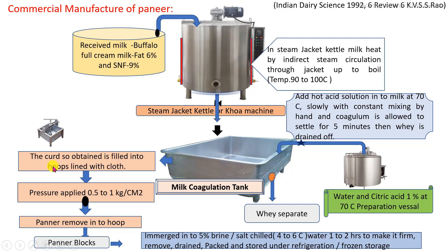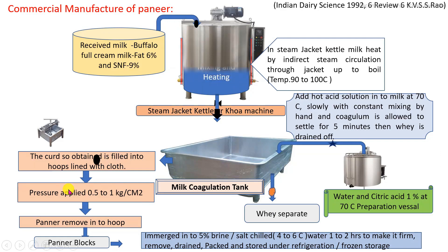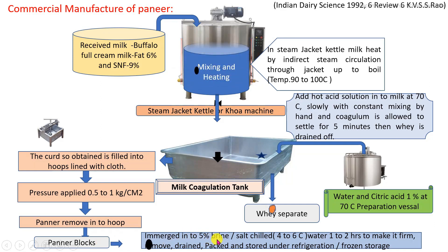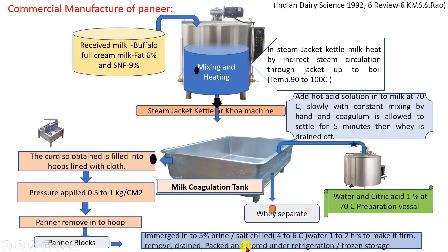The coagulated mass is filled into hoops lined with cloth and pressed using the paneer pressing process. The pressure specifically applied is 0.5 to 1 kg per centimeter square, sufficient to obtain the final shape of the paneer. Then paneer is removed from the hoops (molds), and the paneer blocks are immersed in 5% brine solution (salt solution) at a temperature of 4 to 6 degrees Celsius for 1 to 2 hours to improve textural properties. Finally, it is drained, packed into packaging material — packaging may be carried out by vacuum packaging system — and stored under refrigeration and frozen conditions.